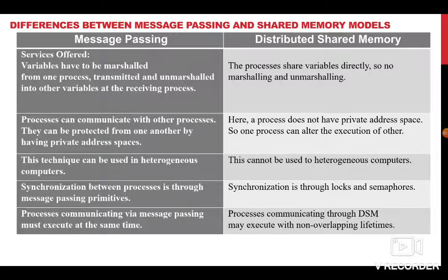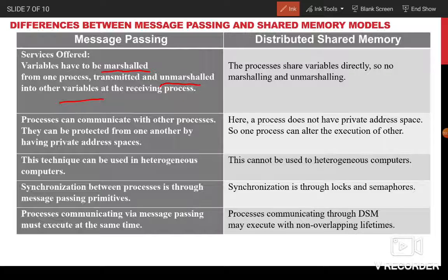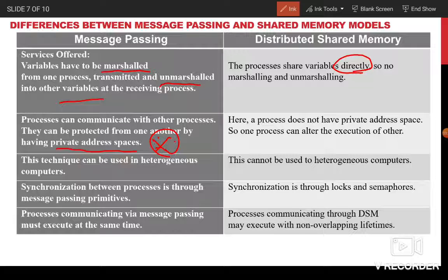Now let's look at the differences between the two models. In the message passing model, variables must be marshalled — meaning packed into an object or packet — before transmitting to the receiver process, and then unmarshalled back into variables at the receiver side. In distributed shared memory, marshalling is not needed; variables are shared directly. In the message passing model there is a private address space, so processes can be protected from one another.